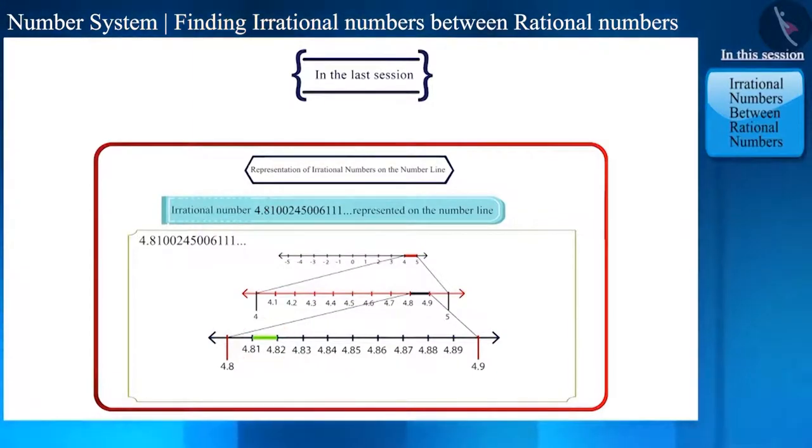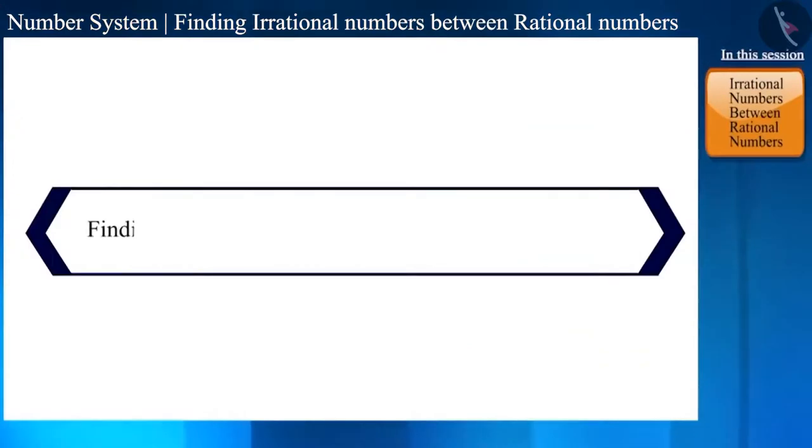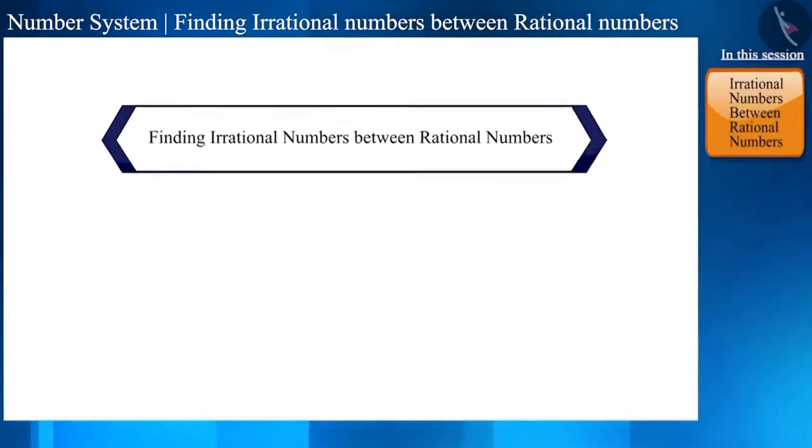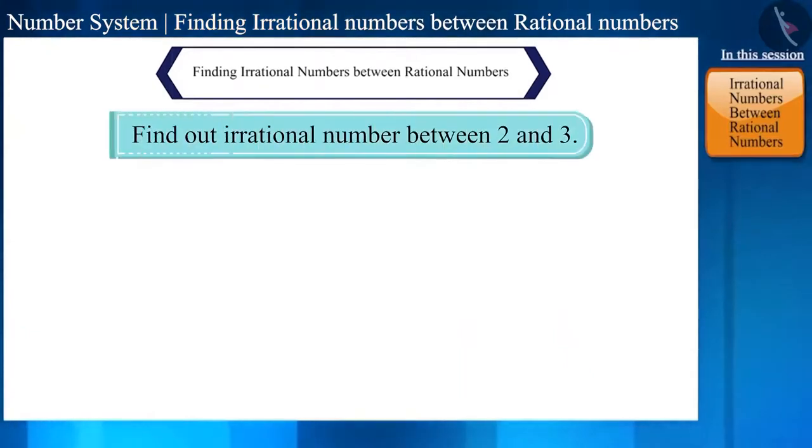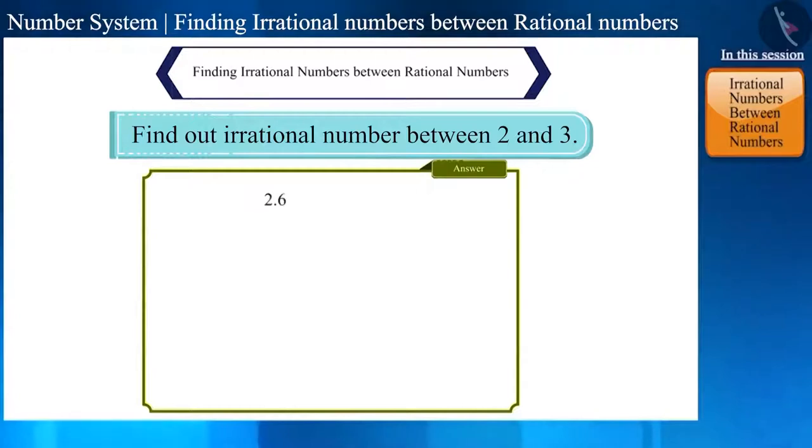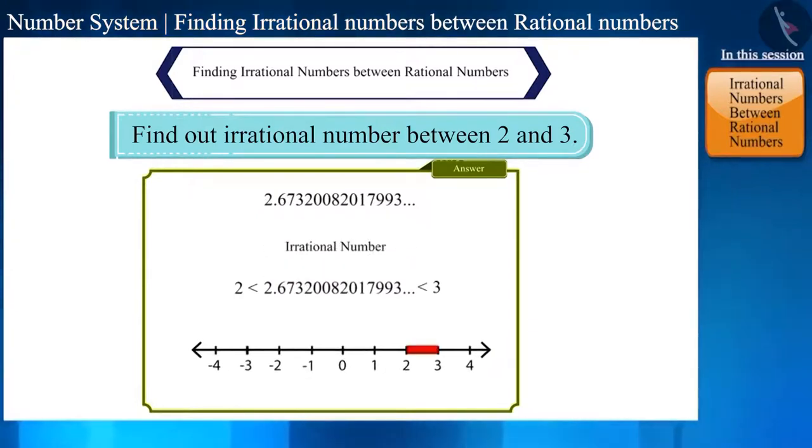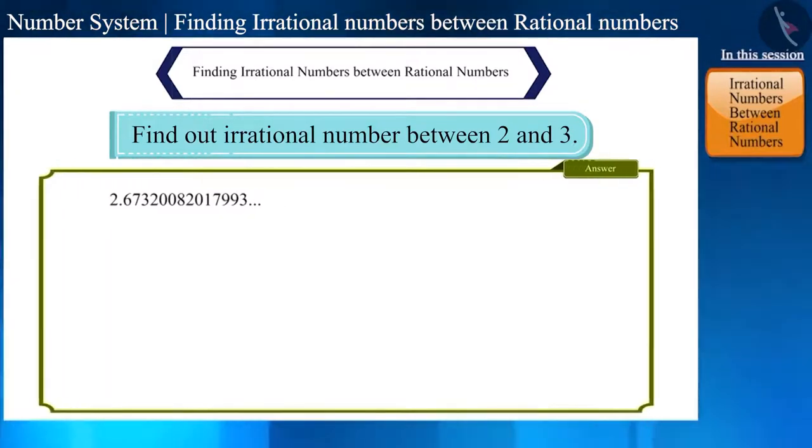So let's take an example and see how to find irrational numbers between two rational numbers. Suppose we have to find an irrational number between 2 and 3. After the number 2, if we keep writing digits after the decimal point without repeating the digits, then the number thus created will be an irrational number which is greater than 2 and smaller than 3.